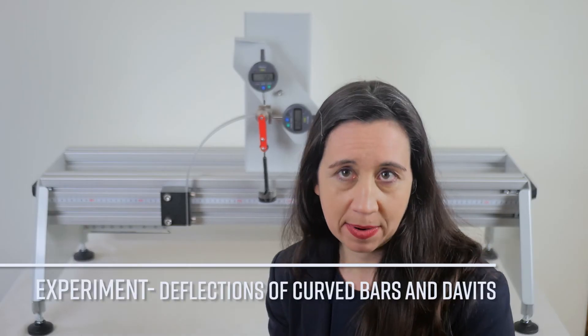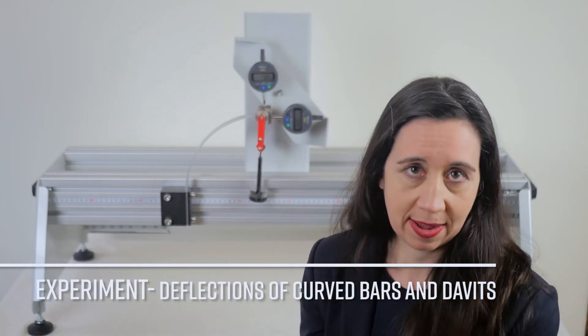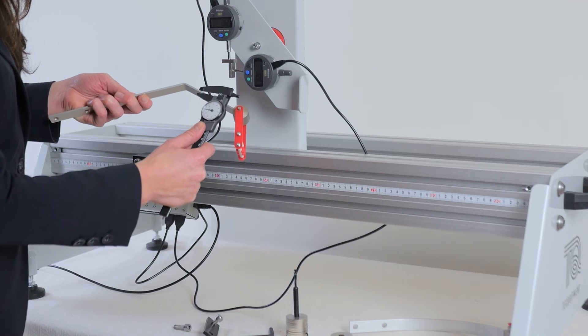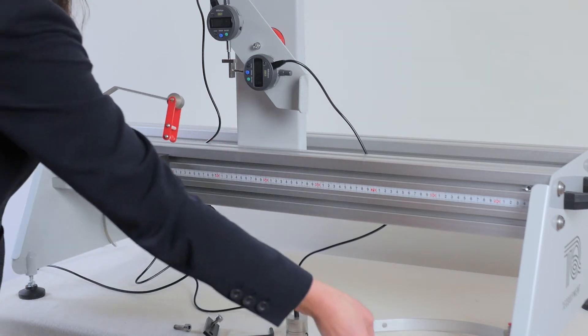Now it's time to do the experiment. I'm starting with the angled davit. First, I compare the theoretical calculated deflection using the supplied vernier caliper to measure the cross-sectional dimensions of the davit.